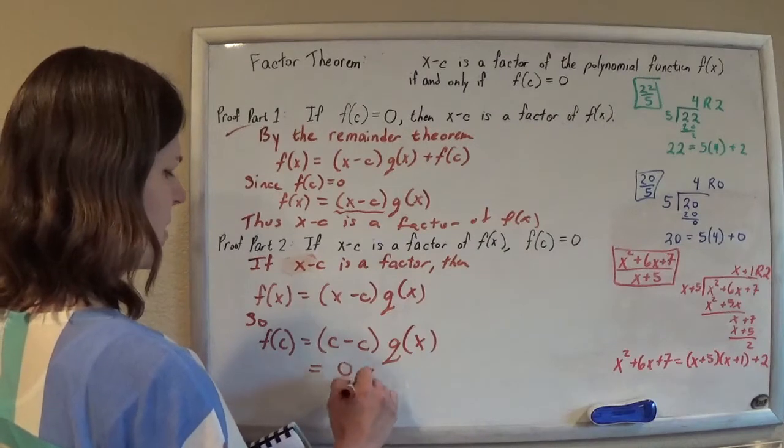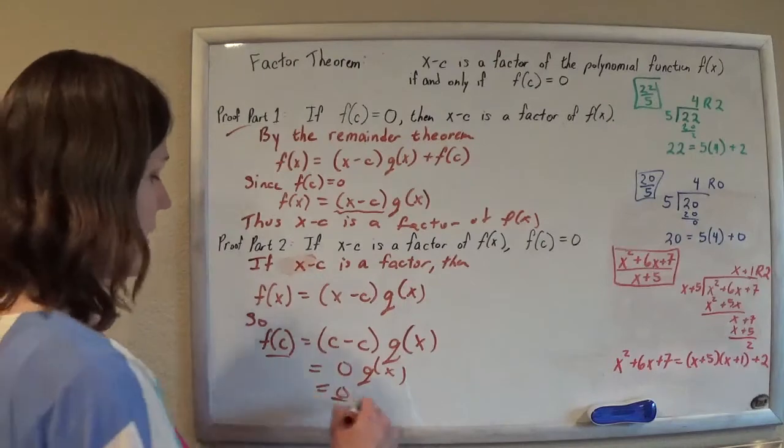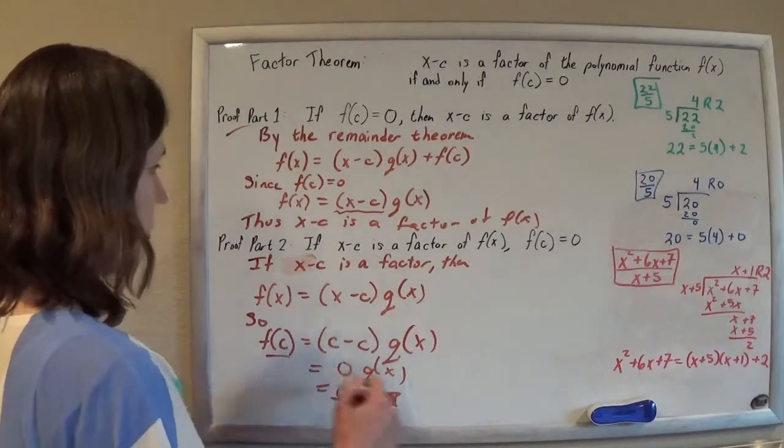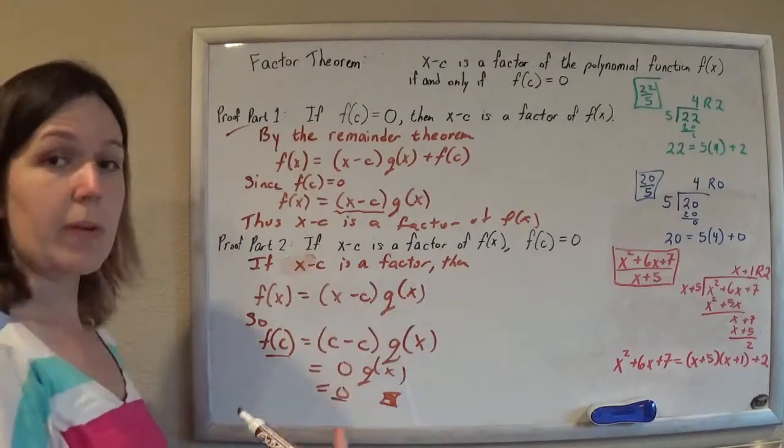and that's zero times q of x, so that's zero. So f of c equals zero, like we planned. And so we've proven both parts, the if and only if part. And that's your little proof of the factor theorem.